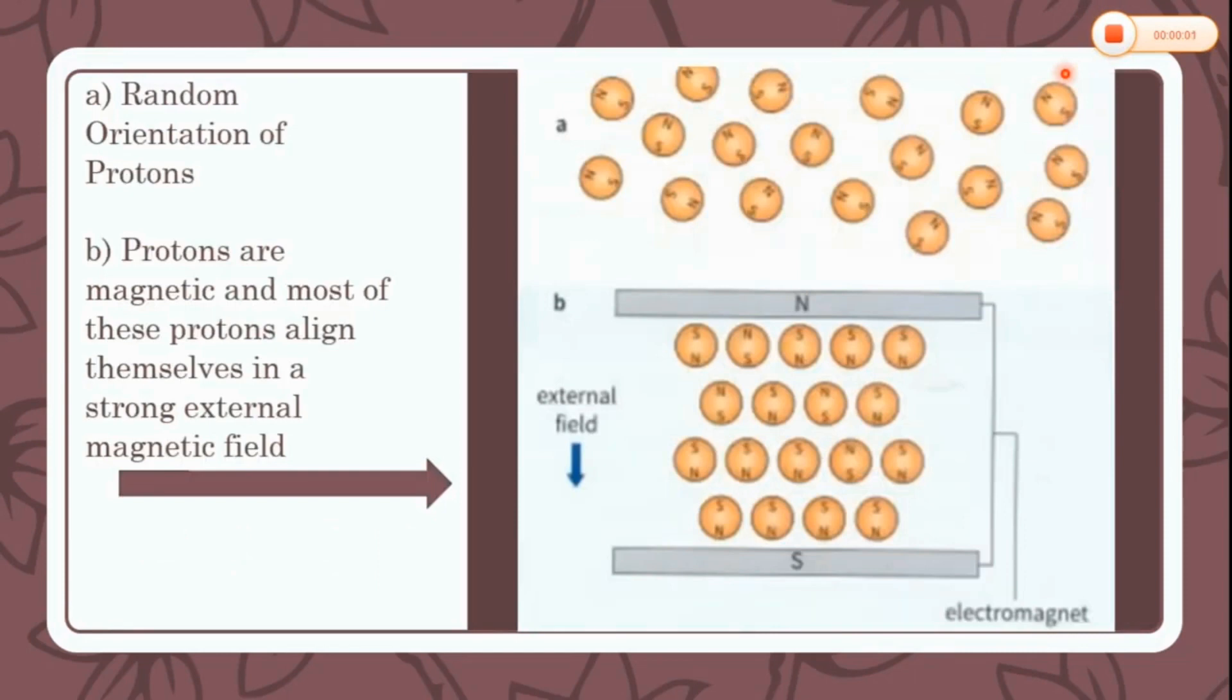The hydrogen nucleus is positively charged and has a spin. It behaves like a tiny magnet with two poles, north and south. When there is no external magnetic field as in part A, these protons are aligned randomly.